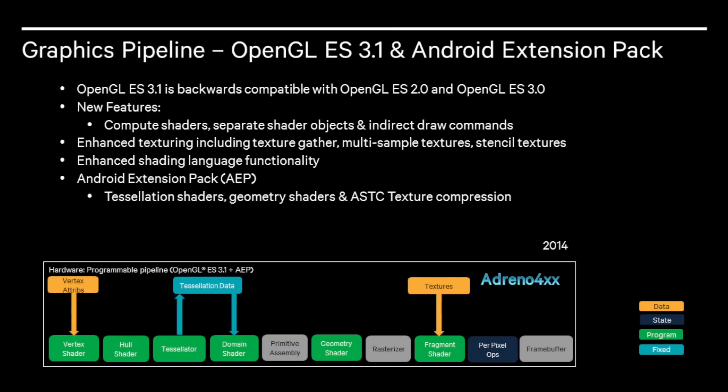OpenGL ES3.1 and the Android Extension Pack provide additional functionality to the developer. OpenGL ES3.1 is backwards compatible with 3.0 and 2.0. New features include compute shaders, separate shader objects, indirect draw commands, enhanced texturing including texture gather, multi-sample textures, stencil textures, and enhanced shading language functionality. The Android Extension Pack is a set of new extensions over GL ES3.1, with new features including tessellation shaders, geometry shaders, and ASTC texture compression.